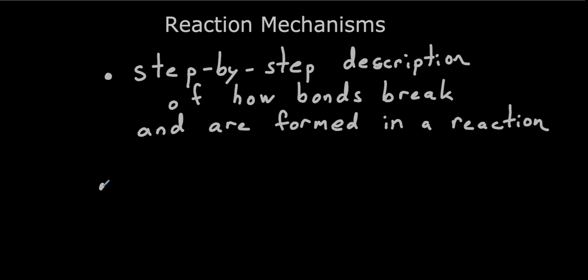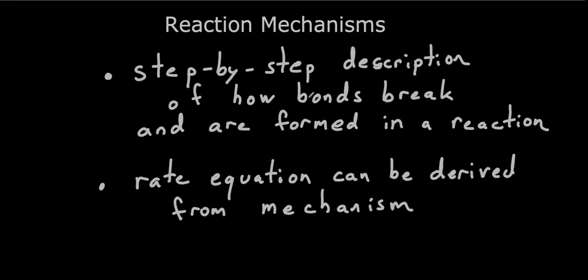An important aspect of reaction mechanisms is that if you have the mechanism, you can determine the rate equation. So the rate equation can be derived from the mechanism. It's important to note that this is a one-way relationship. If you have the mechanism, you can determine the rate equation. But it's not necessarily true that you could get the mechanism from the rate equation, because there's more than one mechanism normally that could give the same rate equation.